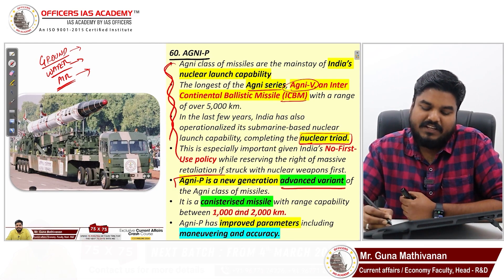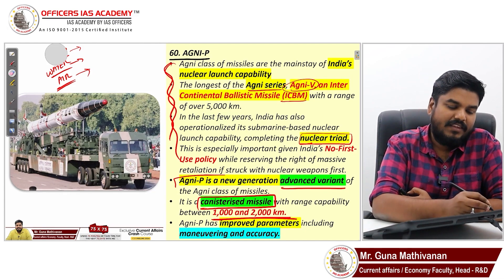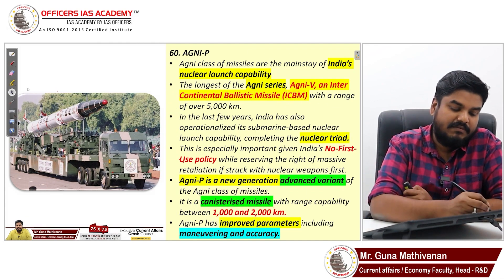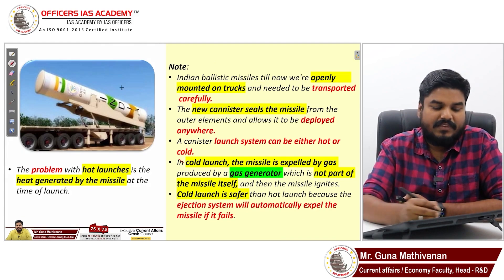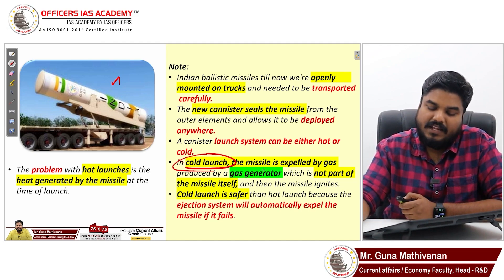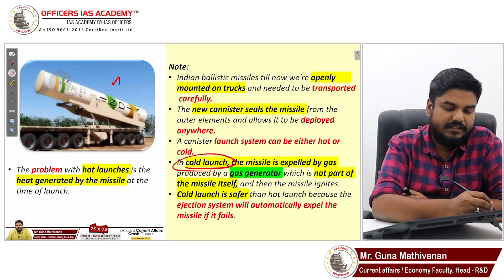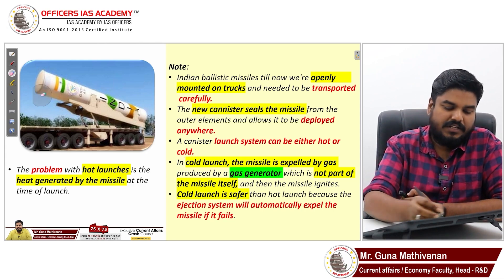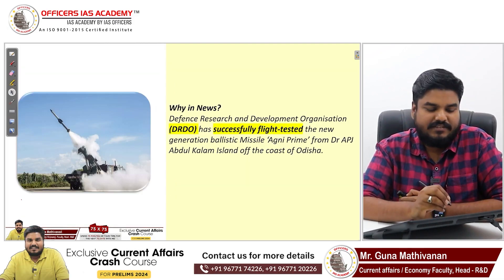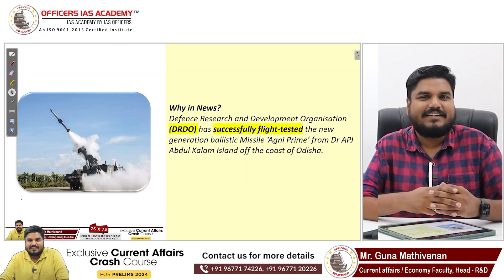Agni P is an advanced variant — it is a canisterized missile with a range of 1000 to 2000 kilometers, using the cold-launch-then-hot-launch system. It was in the news because DRDO was flight-testing this Agni P missile. That's why it was newsworthy. See you in the next video — till then, bye, take care.